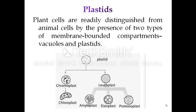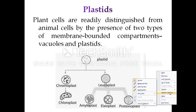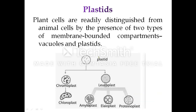Plant cells are readily distinguished from animal cells by the presence of two types of membrane-bounded organelles. These organelles include vacuoles and plastids, which are present only in plant cells and absent in animal cells. These plastids are originated from pro-plastids, which give rise to plastids that are further classified based on the functions they perform.